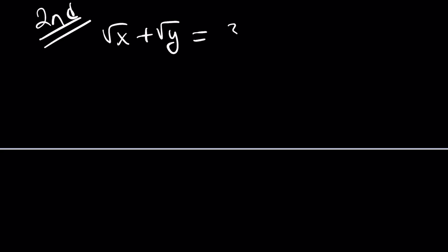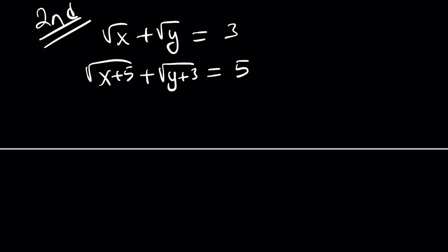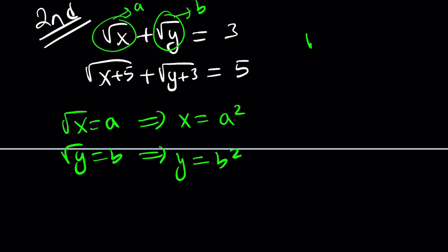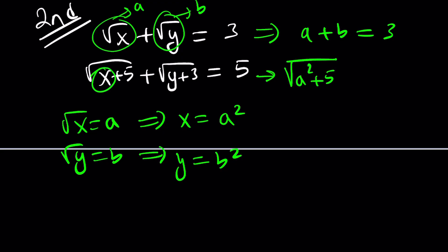For the second method, substitution comes to the rescue. Let's call square root of x equal to a and square root of y equal to b, so x equals a² and y equals b². This linearizes the first equation to a plus b equals 3. In the second equation, x is replaced by a², giving square root of a² plus 5, and y by b², giving square root of b² plus 3, all equal to 5.